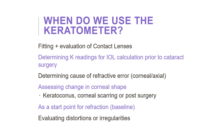Keratometry is also used for determining the cause of refractive error, assessing change in corneal shape due to pathology — for example keratoconus, corneal scarring or post-surgery. It's used as a starting point for refraction and for evaluating distortions or irregularities of the cornea.